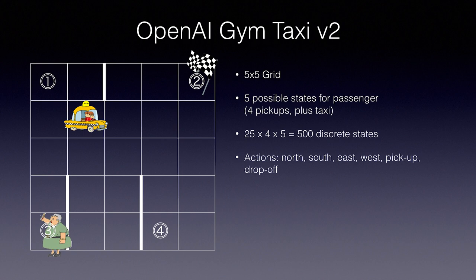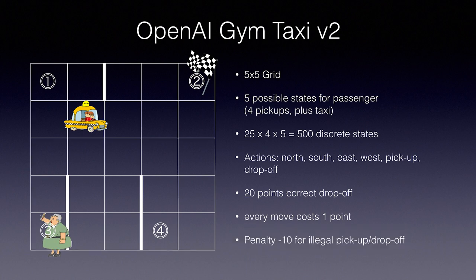The taxi and the passenger always start off in a random square. The taxi must pick up the passenger and drop off at the designated spot. A correct drop off gives 20 points but every single move that it takes to get to that drop off costs one point. Plus there is a penalty of minus 10 points for every illegal pick up and drop off action.